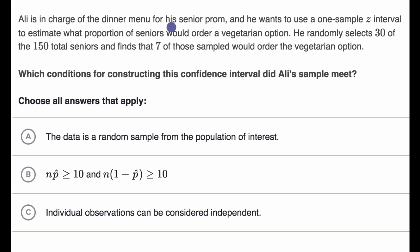Ali is in charge of the dinner menu for his senior prom, and he wants to use a one-sample z interval to estimate what proportion of seniors would order a vegetarian option. He randomly selects 30 of the 150 total seniors and finds that seven of those sampled would order the vegetarian option.